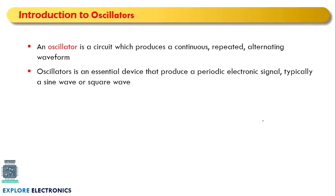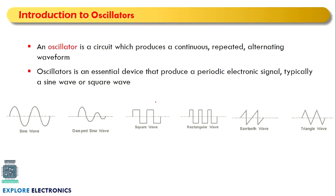What is an oscillator? An oscillator is a circuit which produces a continuous or repeated signal — an alternating waveform. We can also define it as an essential device that produces a periodic electronic signal, typically a sine wave or square wave. Some oscillators will also produce a sawtooth wave, triangular wave, or rectangular wave.